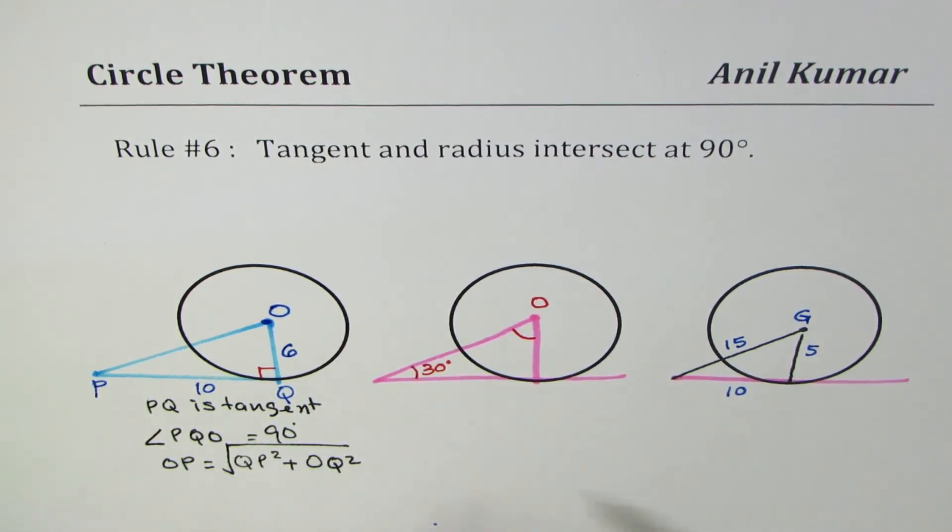We can now calculate the length OP as square root of 10 squared plus 6 squared. 10 squared is 100, 6 squared is 36, so we get square root of 100 plus 36, which is square root of 136.